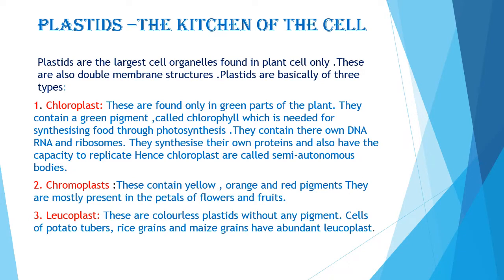The plastids, they are called the kitchen of the cell. Plastids are the largest cell organelles which are found in the plant cell only. Remember, they are present in plant cell only — they are not present in the animal cell. These are also a double membrane structure.